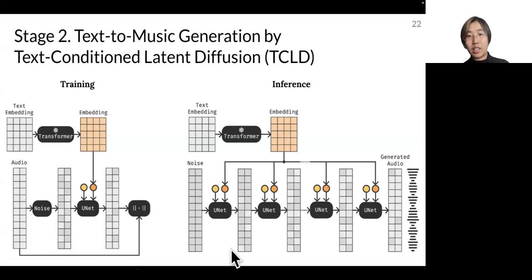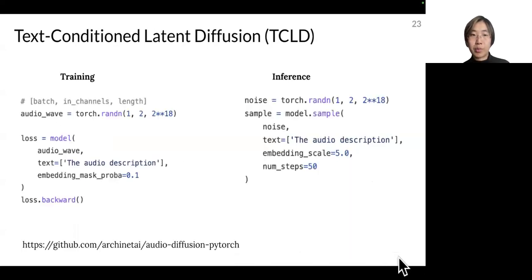And then in the inference mode, this conditioning on the required text embedding is used across all the U-net layers in the decoding phase. In this way, we're able to generate music that is highly relevant to the text that we condition on. Here we also unfold how we implement that in the Python package on training and inference steps.